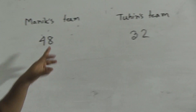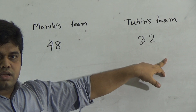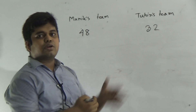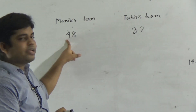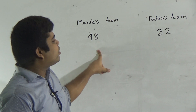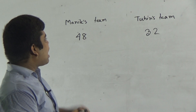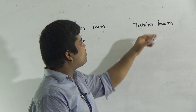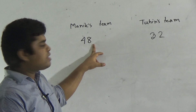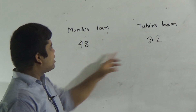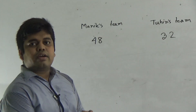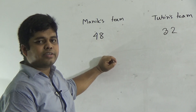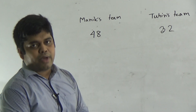My dear students, which one is greater — 48 or 32? I know you are very smart. You can easily answer: 48 is greater than 32. So we can easily decide that Manik's team made more runs. And how many more? We subtract 32 from 48 to get the required amount of runs. We subtract these 32 runs from 48 runs and we get the required amount of more runs of Manik's team.